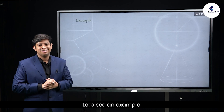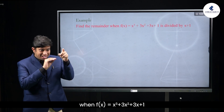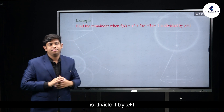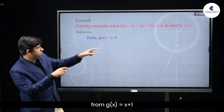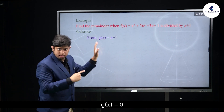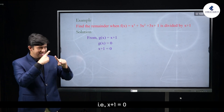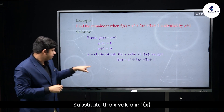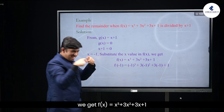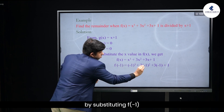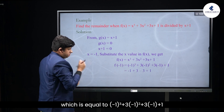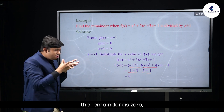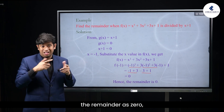Example: Find the remainder when f(x) = x³ + 3x² + 3x + 1 is divided by x + 1. Solution: From g(x) = x + 1, set g(x) = 0, that is x + 1 = 0, so x = -1. Substituting x = -1 into f(x): f(-1) = (-1)³ + 3(-1)² + 3(-1) + 1. After solving, we get the remainder as 0.